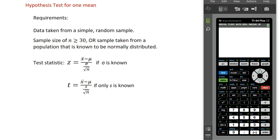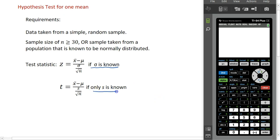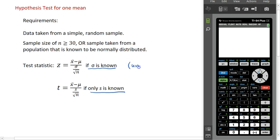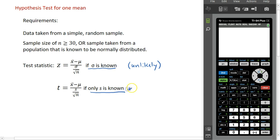The test statistic we use for this hypothesis test depends on what information we have, namely the standard deviation. If the population standard deviation is known, we use the z statistic. If we only have the standard deviation from our sample, we use the t statistic. The first case is unlikely — in most hypothesis tests for a mean, we will not have the population standard deviation, so in most cases we use the t statistic.